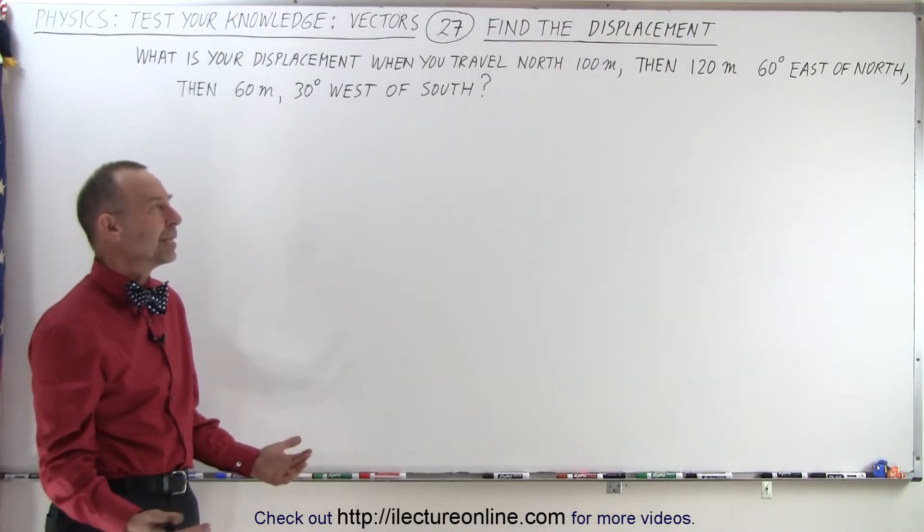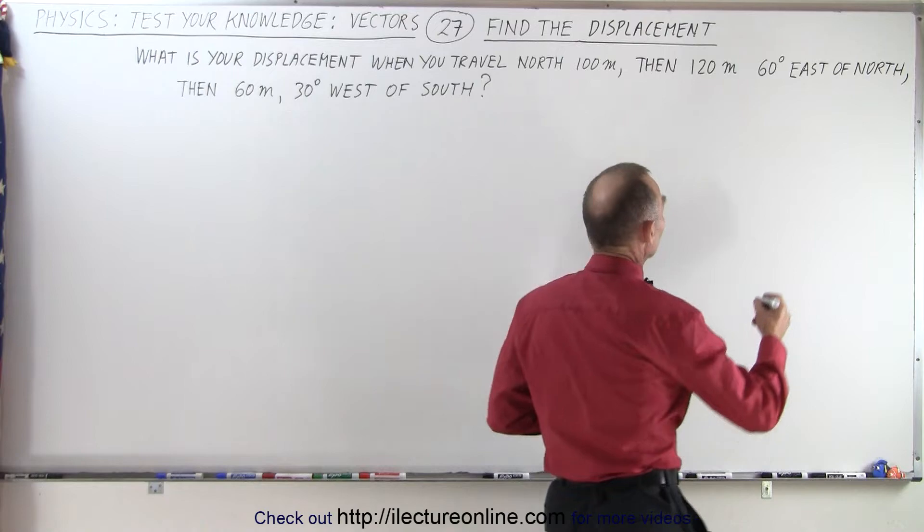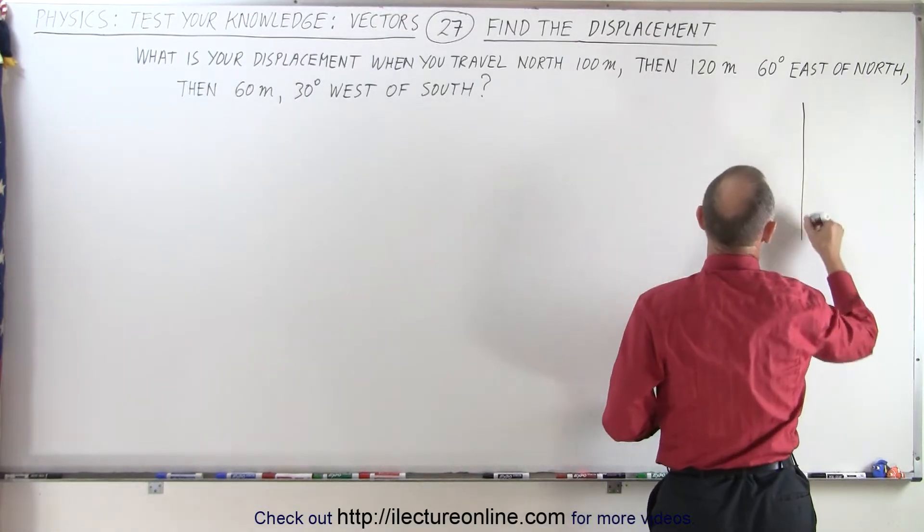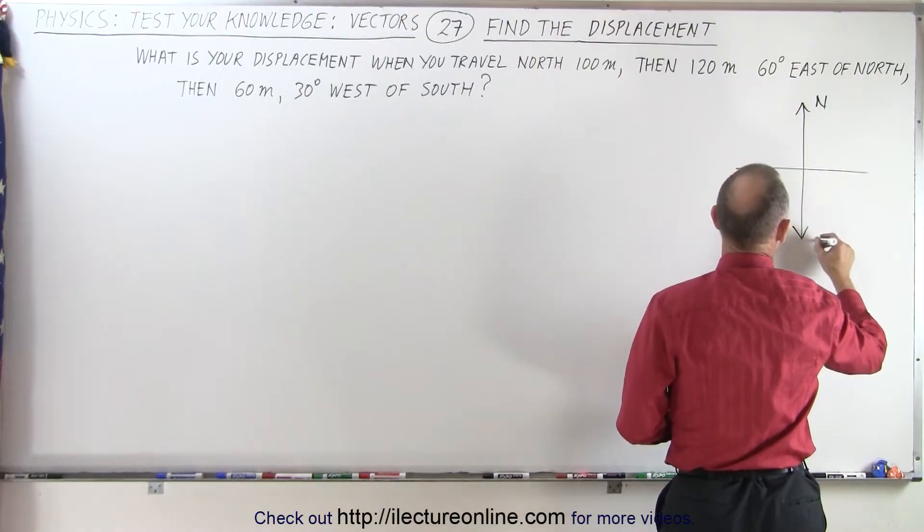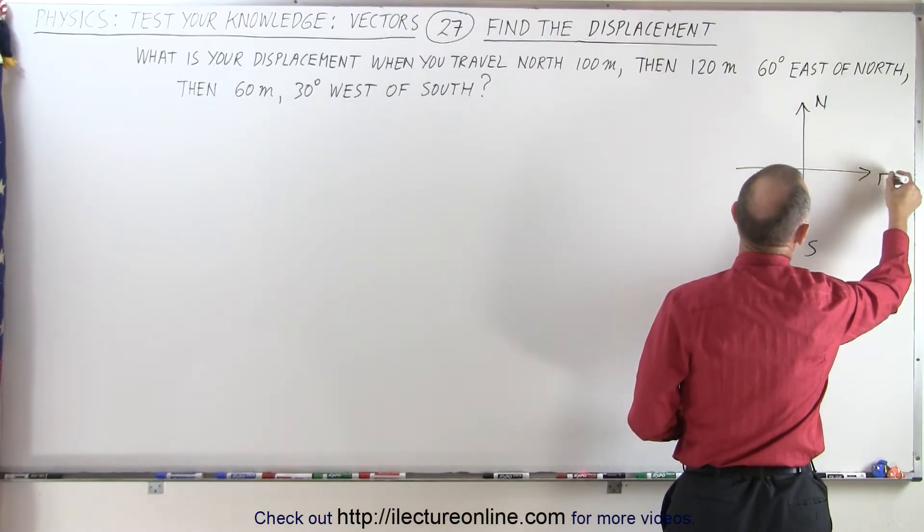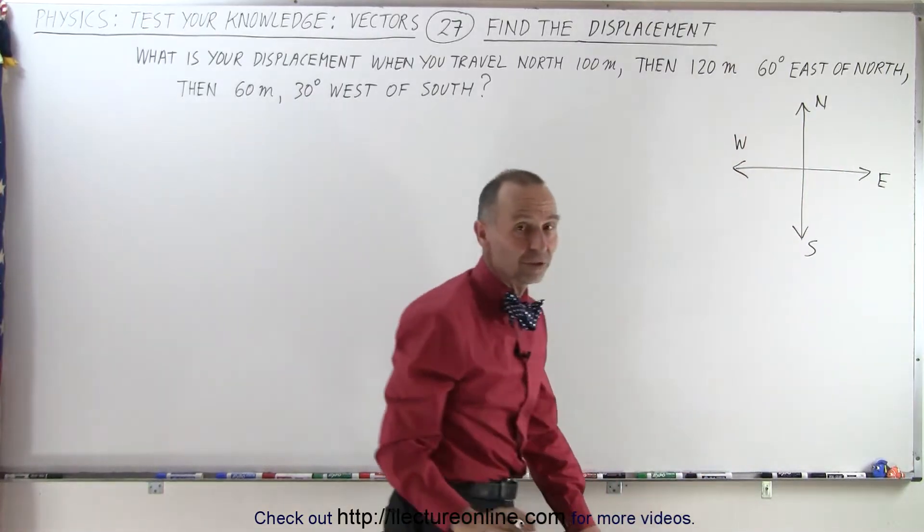So what does that even mean? Well first what we need is compass directions. It's always good to draw those on your paper. So directly up is considered north, south is downward, to the right is east, and to the left is west. So it's always good to have that as a reference.